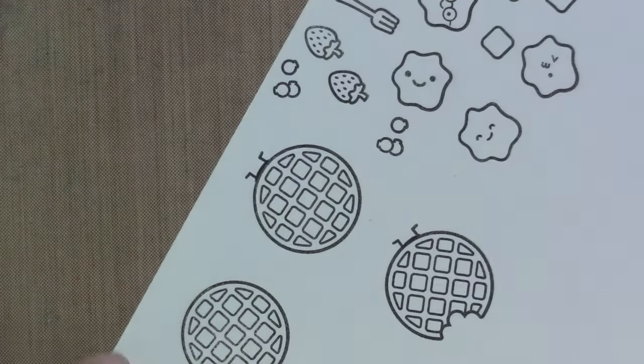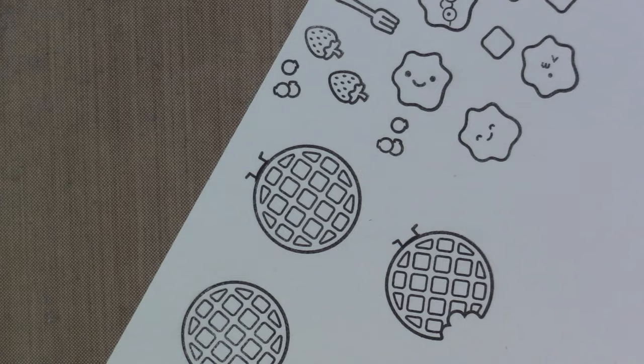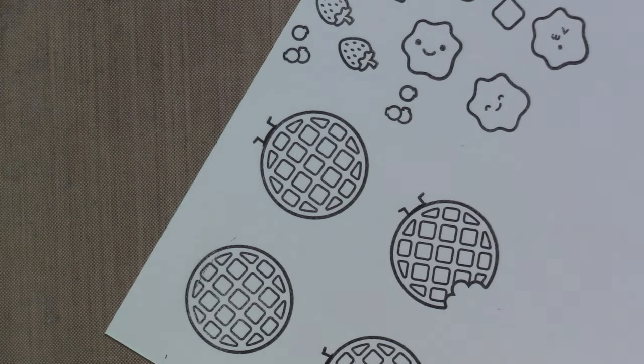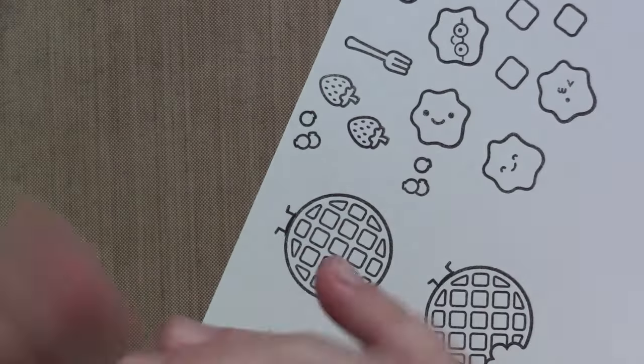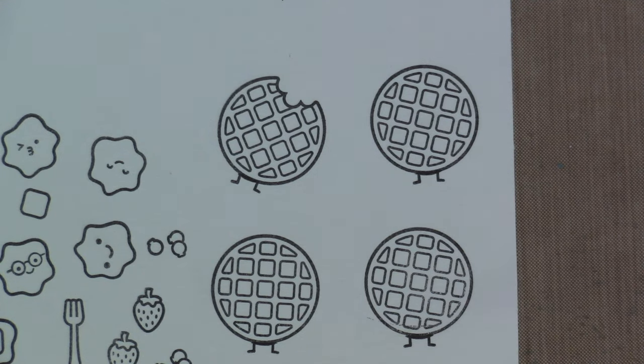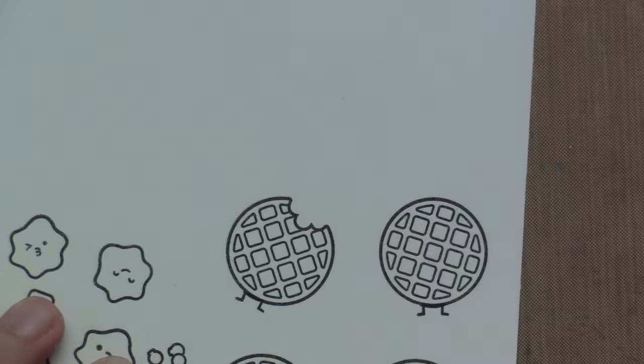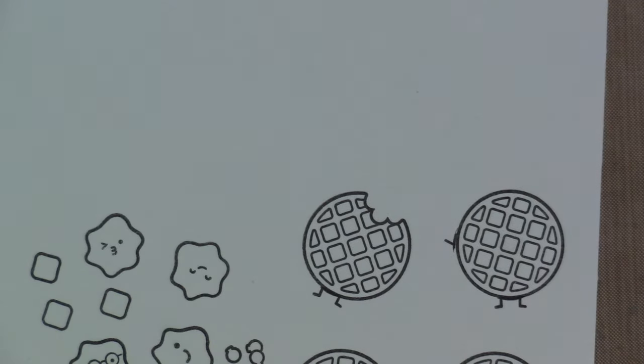I am lining up the bottom of the pea with the bottom of the waffle for the legs, and then I'm also doing that for the arms of the pea as well.